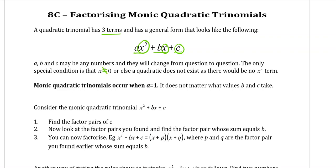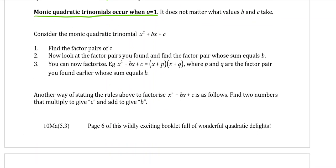Monic trinomials occur when a is equal to 1. It still does not matter what values b and c take on. So because a is 1, our trinomial will look like x squared plus bx plus c. To factorise it, we are going to find the factor pairs of c, and then from the possible factor pairs we need to find the ones that will sum to give b. In other words, they have to multiply to give the number on the end, and add to give the number in front of the x. And then we factorise into a set of double brackets using those two numbers p and q.